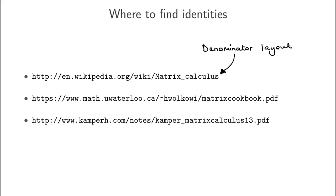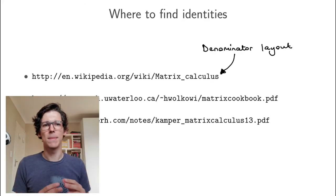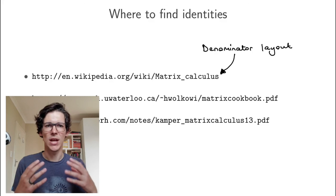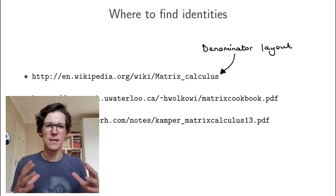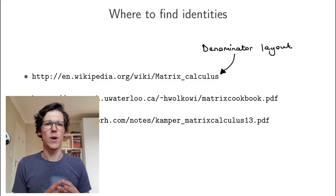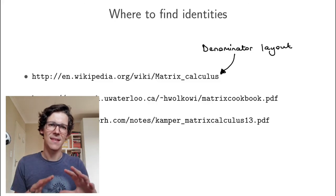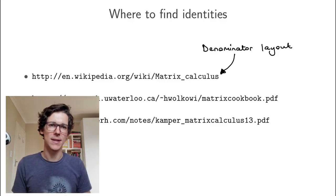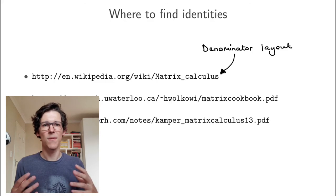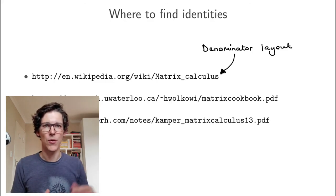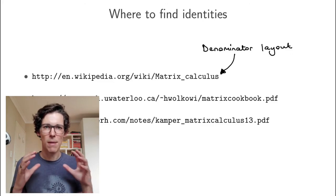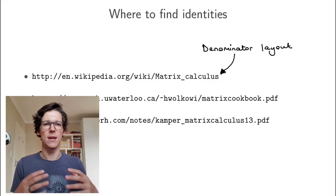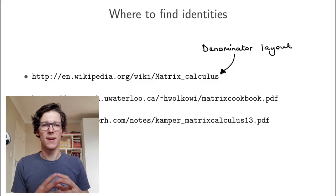Without the context of a problem, it's a little hard to see exactly where these vector and matrix differentiation definitions and identities fit into the bigger picture. For now, just understand the fundamental idea and know where to look to find identities you might need. If you watch other videos such as the one about multiple linear regression or logistic regression, it will become clear why these vector and matrix differentiation identities and definitions make your life a lot easier.